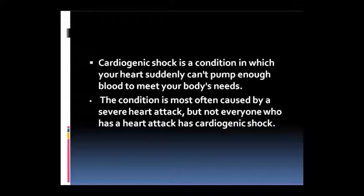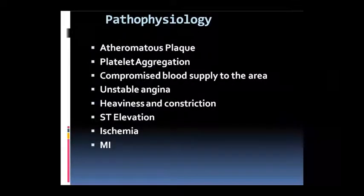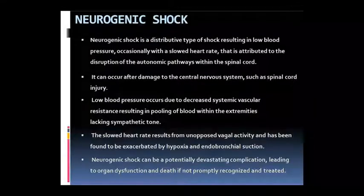Cardiogenic shock ke andar heart jo hai wo sahi pump nahi kar paayega. Aggregation se agar blood supply sahi nahi ho pa rahi kisi area mein, unstable angina se - heaviness, constriction se - isme ST segment badh jaayega, aur agar MI ho jaayega to aisa hoga. Neurogenic shock - distributed type ka hota hai. Low BP ki wajah se occasionally heart rate kum ho jaati hai, autonomic pathway disrupt ho jaayega spinal cord ki wajah se - yeh central nervous system ke damage ki wajah se ho sakta hai, spinal cord ki injury ki wajah se ho sakta hai. Low BP rehne lagega, systemic vascular resistance kum ho jaayega, blood ki pooling hone lag jaayegi extremities wagera ke andar, sympathetic tone kum ho jaayegi, heart rate kum ho jaayegi - unopposed vagal activity ki wajah se aisa dikhai dega.